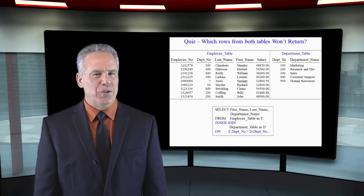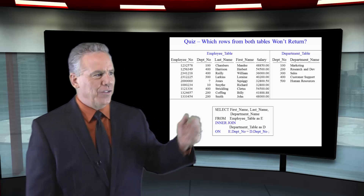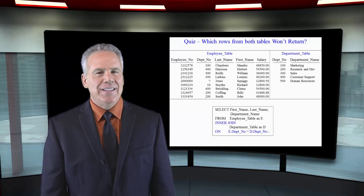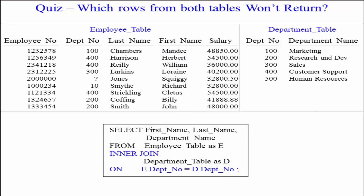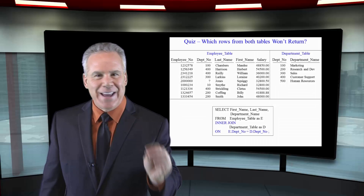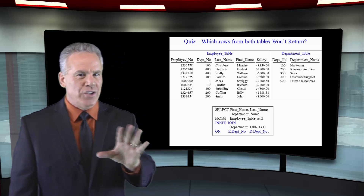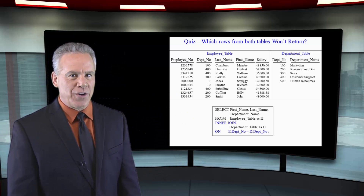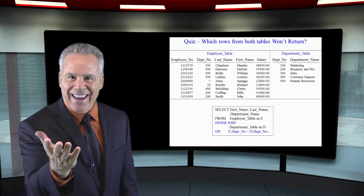We're joining rows from two tables on department number equals department number. Take a look at the tables — I've got my employee table and my department table. Will every row come back when this join runs? That answer is no. Your mission right now is to try to tell me which rows from which tables will not return and why.